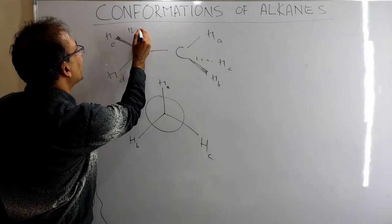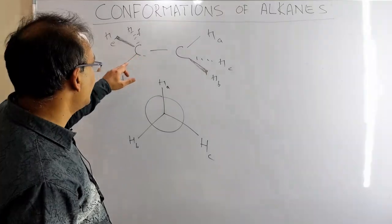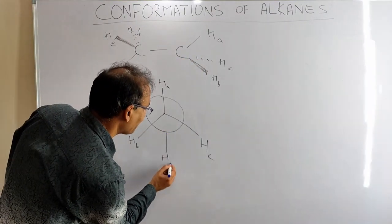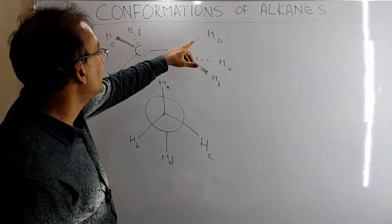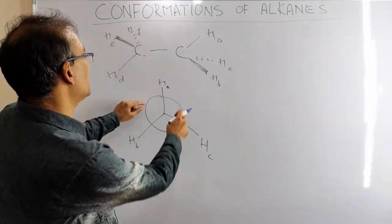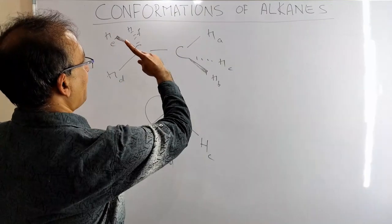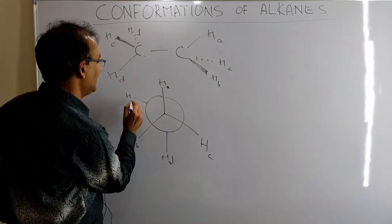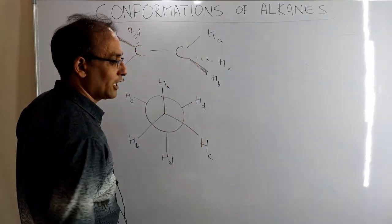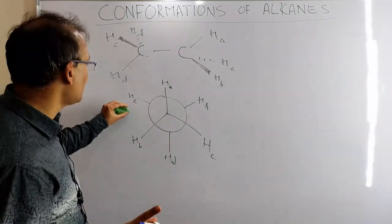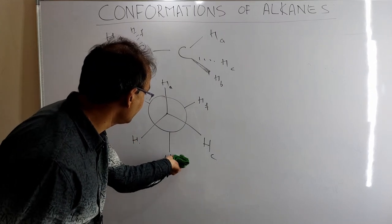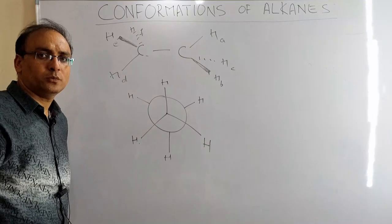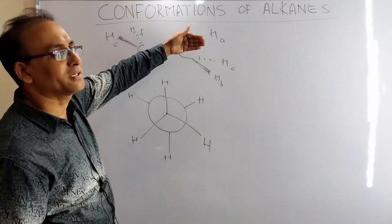Now with the Newman projection drawn, this bond from the back group is in between the two front bonds. Labels D, E, F are placed accordingly. All of these are hydrogens so there is no real difference; the labels A–F are just for clarity. With a little energy available, this bond can rotate. So the question is: how many conformations are possible?